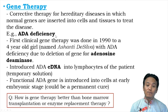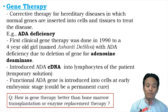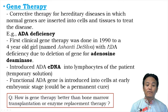ADA deficiency leads to an immunodeficient condition similar to HIV AIDS, making it quite a lethal disease. The first clinical gene therapy was performed on a patient of ADA deficiency in 1990 — a four-year-old girl named Ashanti De Silva. She was suffering from ADA deficiency due to deletion of the gene for adenosine deaminase.